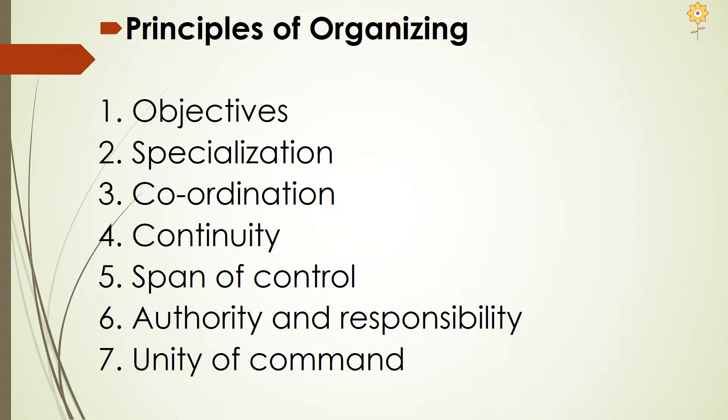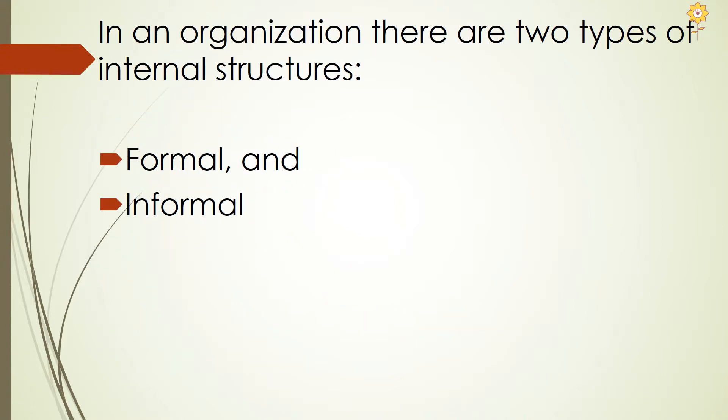The next principle is the principle of unity of command. Subordinates should get orders only from one boss at a time. If you have 10 different bosses, you can imagine the kind of situation you are going to be in because the 10 of them are going to give you different commands. There should not be any duplication of orders, which can lead to confusion. With this we have discussed the 7 principles of organizing.